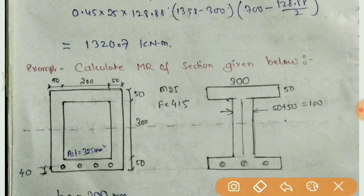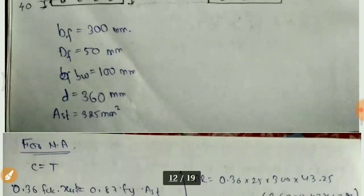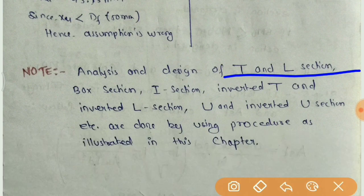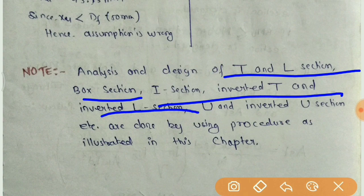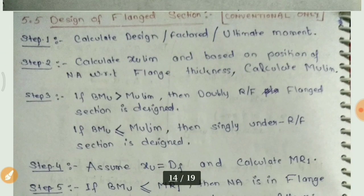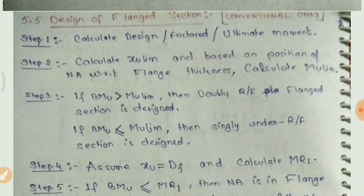d minus 0.42 xu — यह lever arm है, CG of compression is at 0.42 xu from top. यहाँ एक important note है: analysis and design of T, L, box, I, inverted T, inverted L, U and inverted U sections are done by procedure illustrated in this chapter। तो जैसा भी हम लोग देखते आ रहे हो ऐसा ही होगा। यह last question बचा हुआ था।